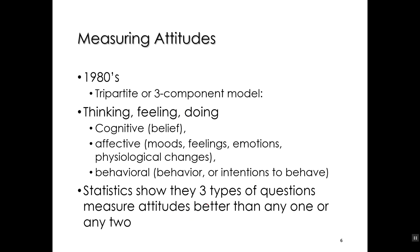Those were some of the major events in the early history of measuring attitudes. The next major step came in the 1980s: the tripartite or three-component model, also called the ABC model. The tripartite model basically says that you need to measure attitudes by measuring three different components: a thinking component, a feeling component, and a doing component. The thinking component is called the cognitive component — often we call these beliefs.